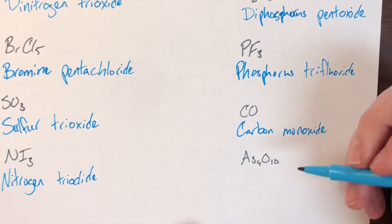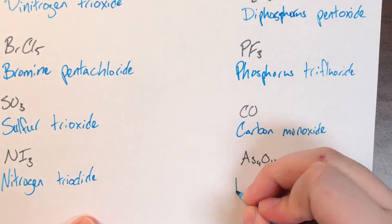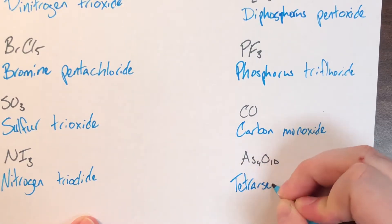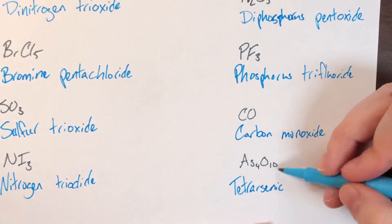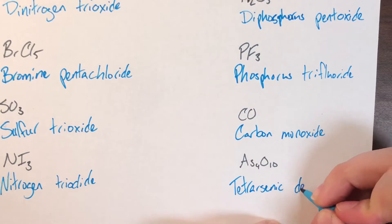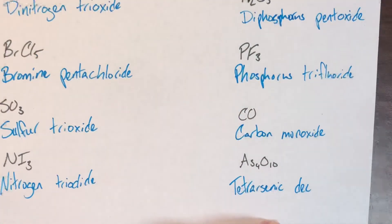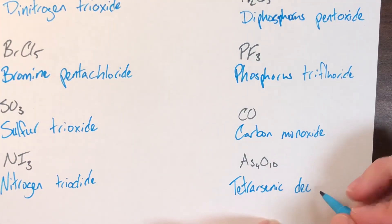Last one: As4O10. As is arsenic, and there are 4 of them, so tetra — no double A — tetraarsenic. The subscript of 10 would normally be deca, but to avoid double vowels we use dec, and O is oxygen whose compound name is oxide. So this is tetraarsenic decoxide.